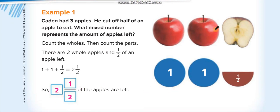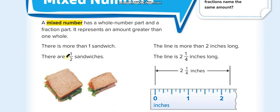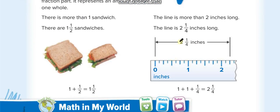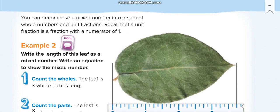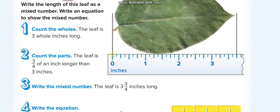For example, if we have two complete apples and the third one is half, we write two whole and 1 over 2. We read it as: two whole one over two. Another example: one whole and 1 over 2 — one is complete and the second is half. Also like two whole and 1 over 4 for inches.